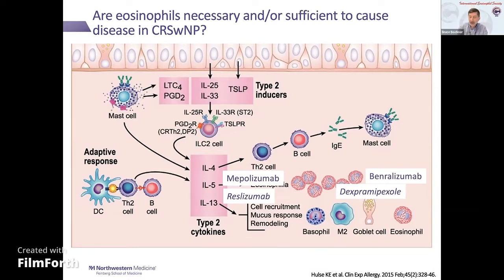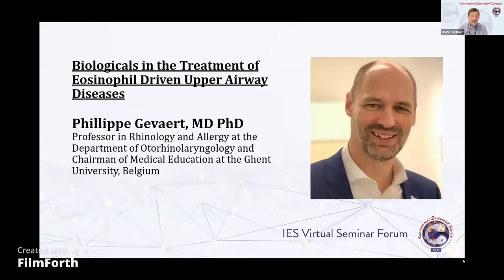The big clinical trials didn't really look at mast cells, so we've only got mast cells going up in one patient and in the dexpramapexol studies. It's interesting to ask whether patients who are failing treatment have a rebound somewhere in another type 2 pathway. That should be considered. It's a really interesting question why some patients do great on these biologics and others just fail them. We'll move on to the next presentation given by Philippe Kavart on Biologicals in the Treatment of Eosinophil-Driven Upper Airway Disease.